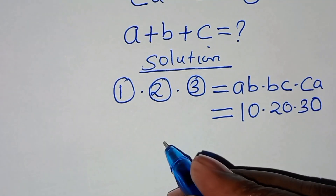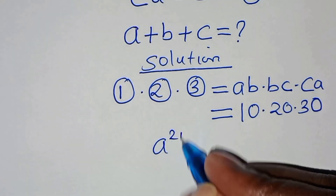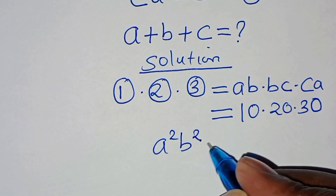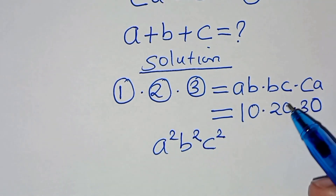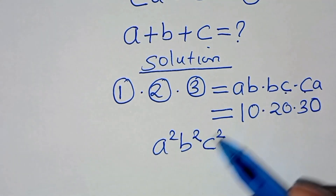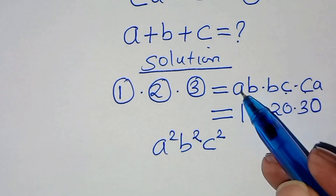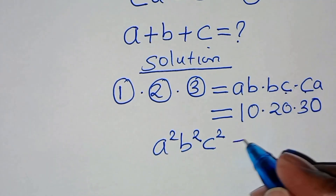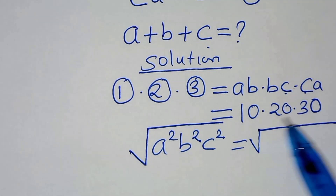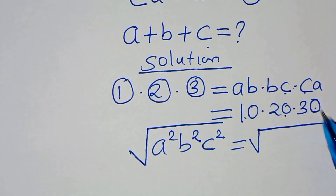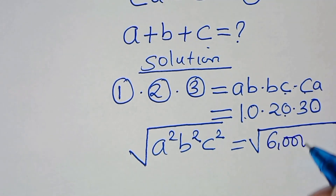So in this case we have a squared multiplied by b squared multiplied by c squared — because a times a is a squared, b times b is b squared, c times c is c squared. This is equal to 10 times 20 times 30, which is 6,000.